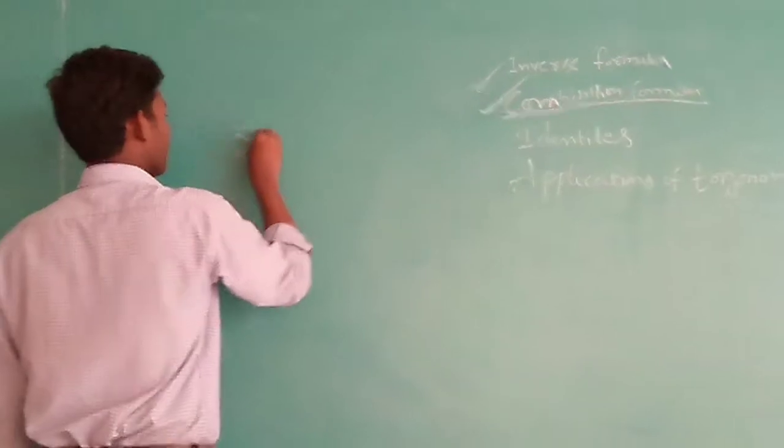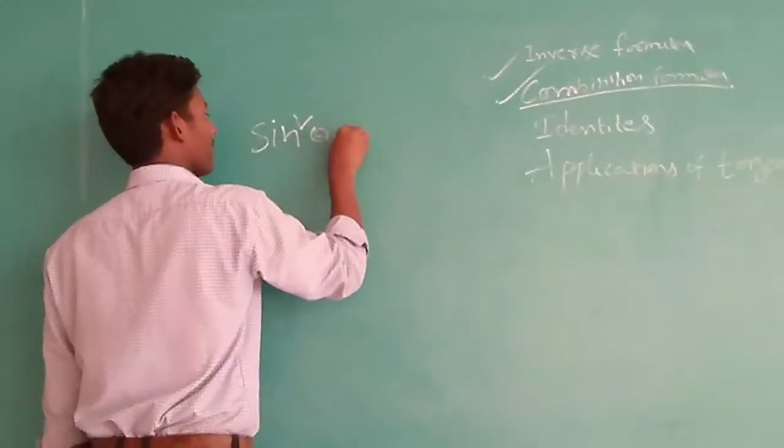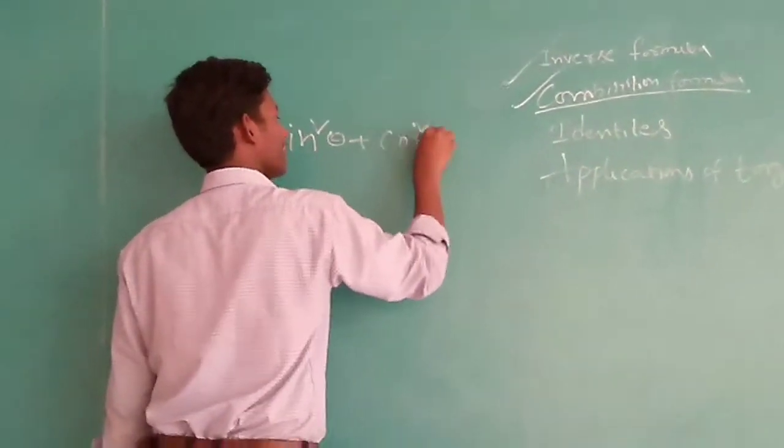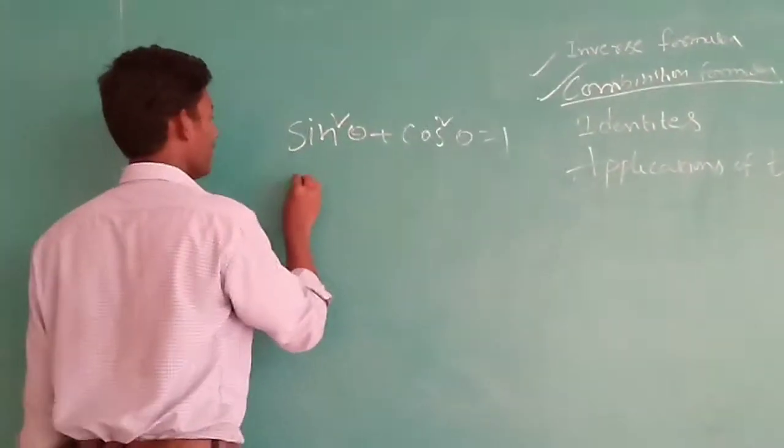First, sine square theta plus cos square theta equals 1. This is the first one.